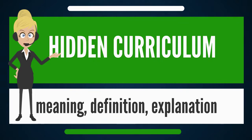While studies on the hidden curriculum mostly focus on fundamental primary and secondary education, higher education also feels the effects of this latent knowledge. For example, gender biases become present in specific fields of study, the quality of and experiences associated with prior education become more significant, and class, gender, and race become more evident at higher levels of education.